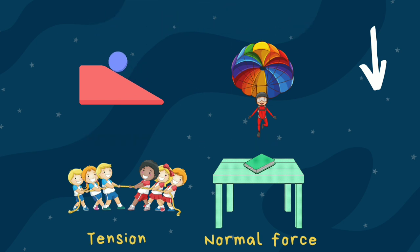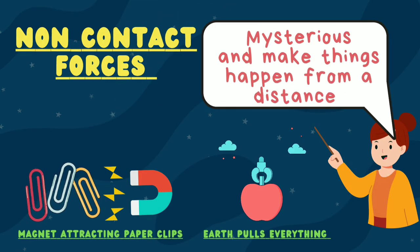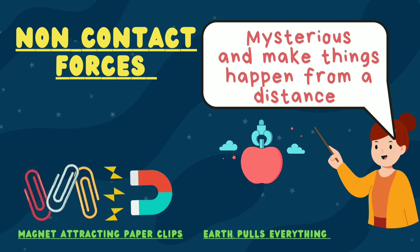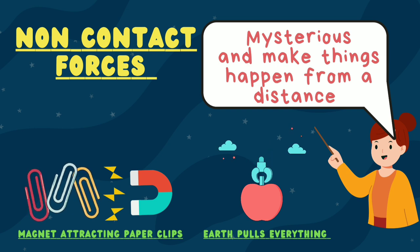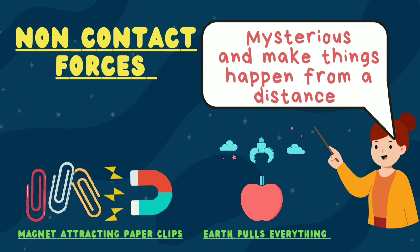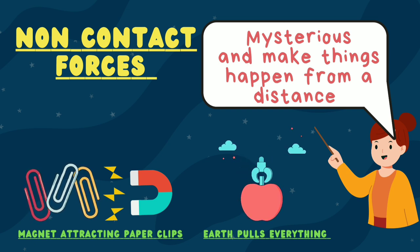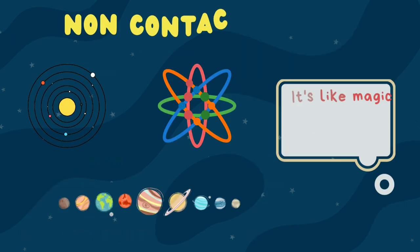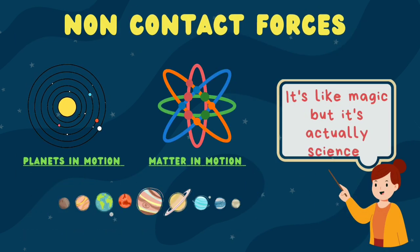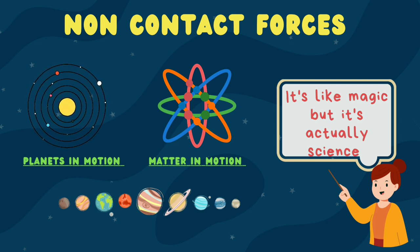But there is another type of force that's just as important and much more mysterious: non-contact forces. These forces can make things happen from a distance, like a magnet attracting a paperclip or the earth pulling you down with its gravitational force. It's like magic, but it's actually science. These non-contact forces keep the planets in our solar system in motion and hold the atoms together in matter.